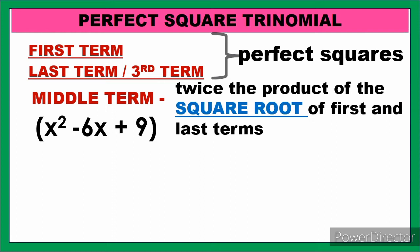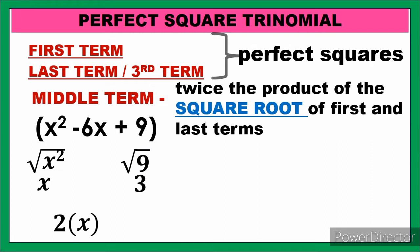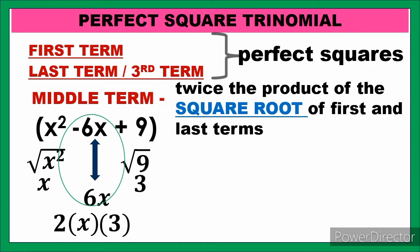Now how do we check the middle term? We take the square root of the first term — square root of x² is x — and the square root of the last term — square root of 9 is 3. Then we compute twice the product: 2 times x times 3 equals 6x. The middle term matches, so this trinomial is a perfect square trinomial.